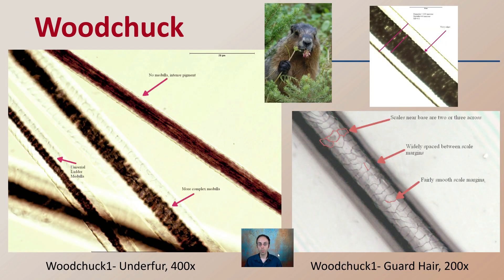Looking at the woodchuck — the underfur shows a compilation of hairs with quite a difference. We have a uniserial lateral medulla, a more complicated medulla, and one area with no medulla due to intense pigmentation. Keeping in mind where you're sampling the hair might require looking at different regions of the individual. Looking at the scales near the base, note the wide shape between the scale margins and the fairly smooth scale margins. The diameter of the hair to the medulla can help us define the medullary index.